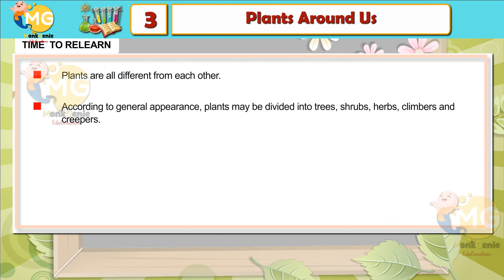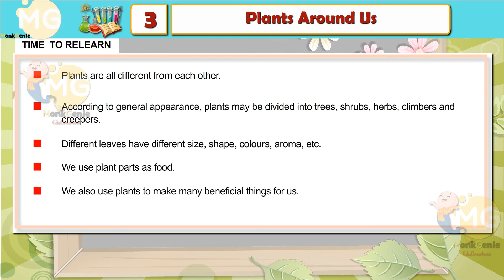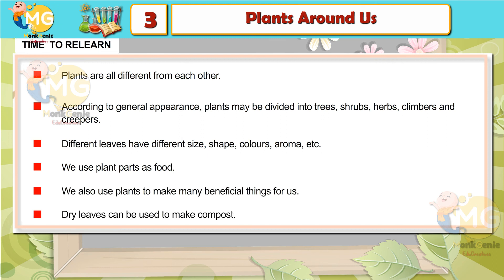Time to recap: Plants are all different from each other. According to general appearance, plants may be divided into trees, shrubs, herbs, climbers, and creepers. Different leaves have different sizes, shapes, colors, and aromas. We use plant parts as food and to make many beneficial things. Dry leaves can be used to make compost.